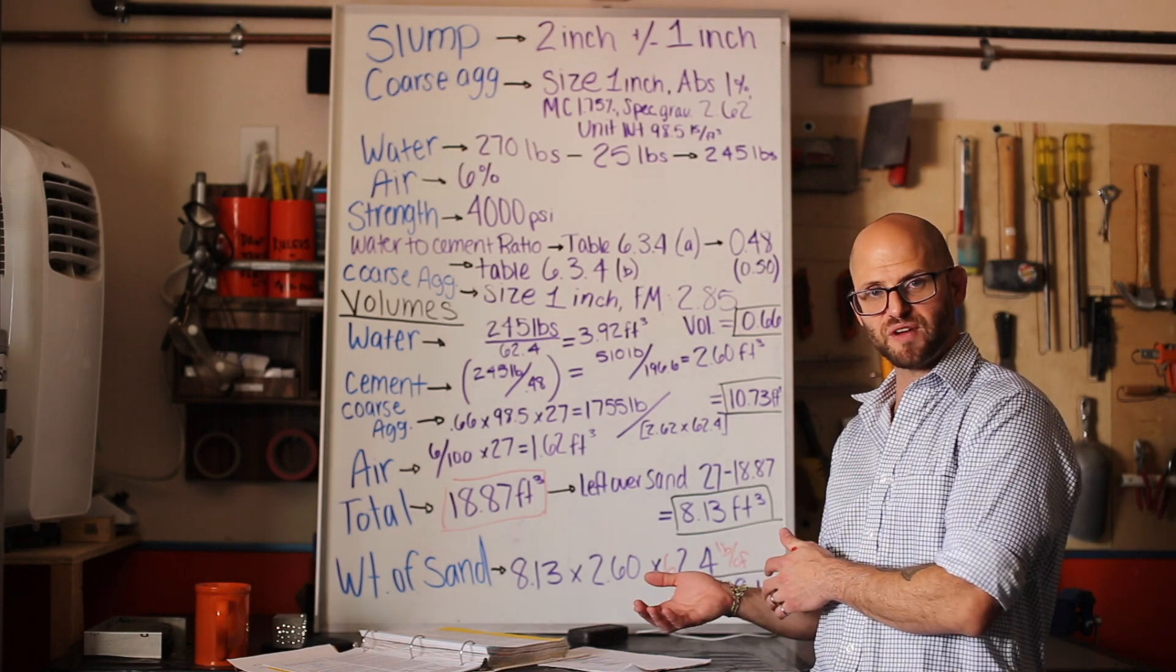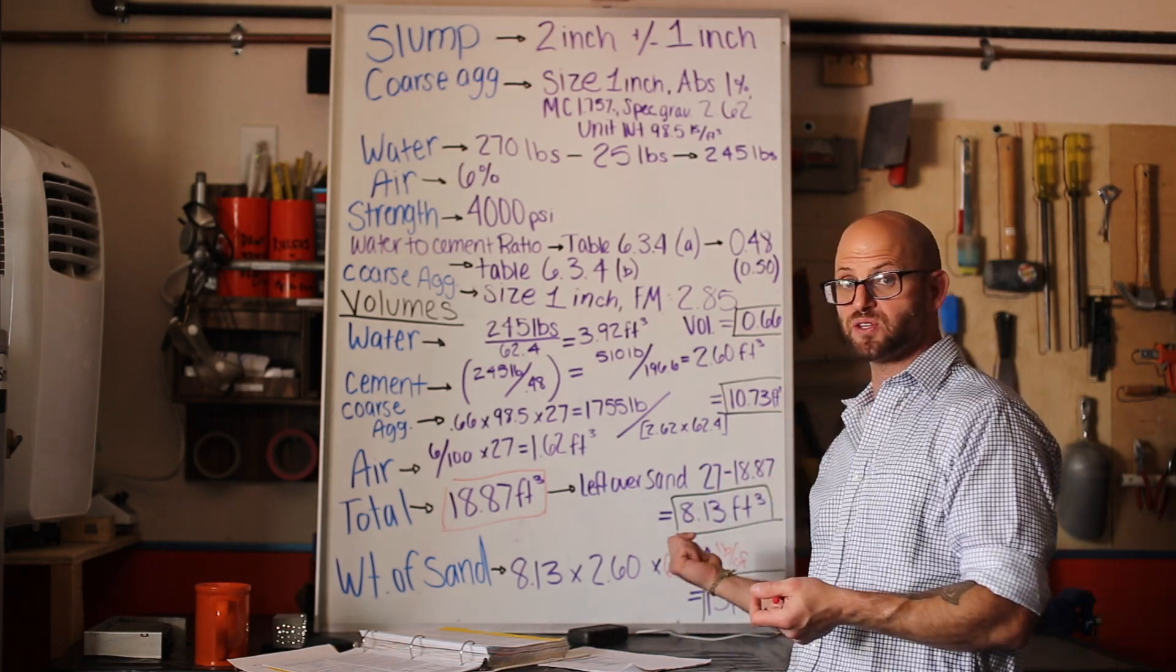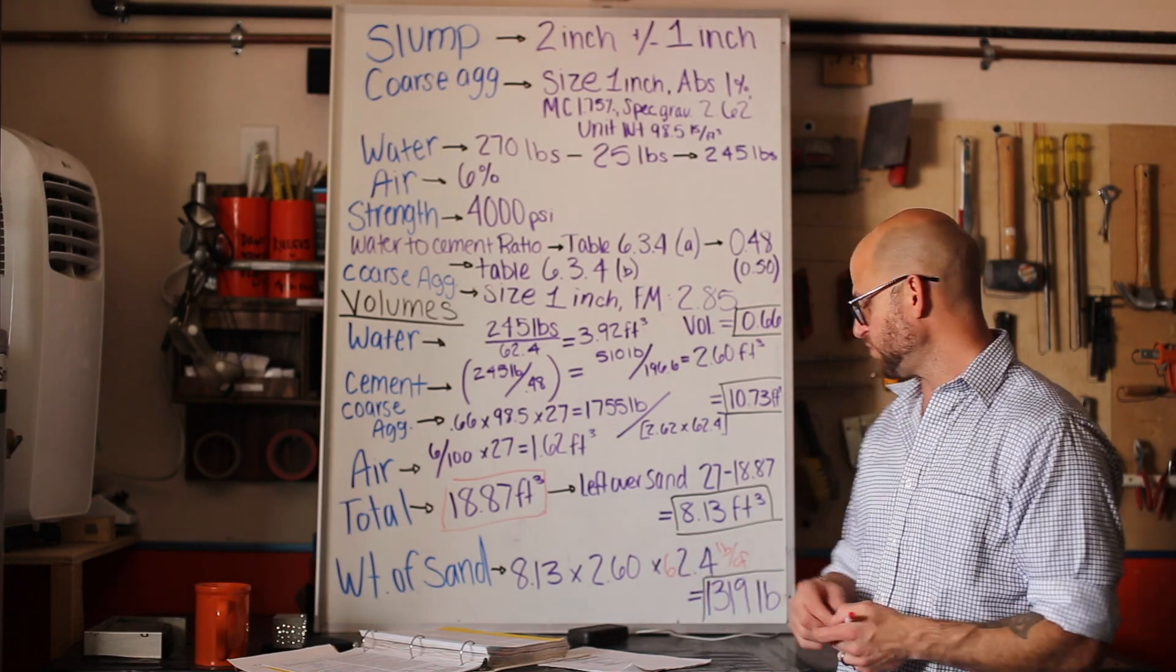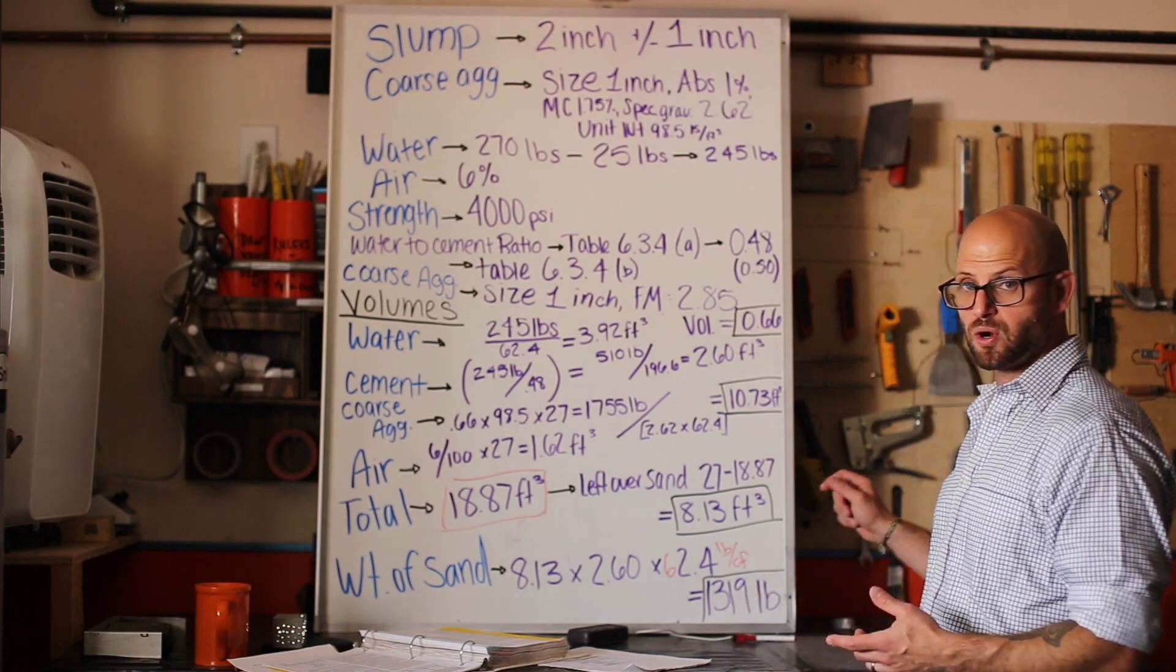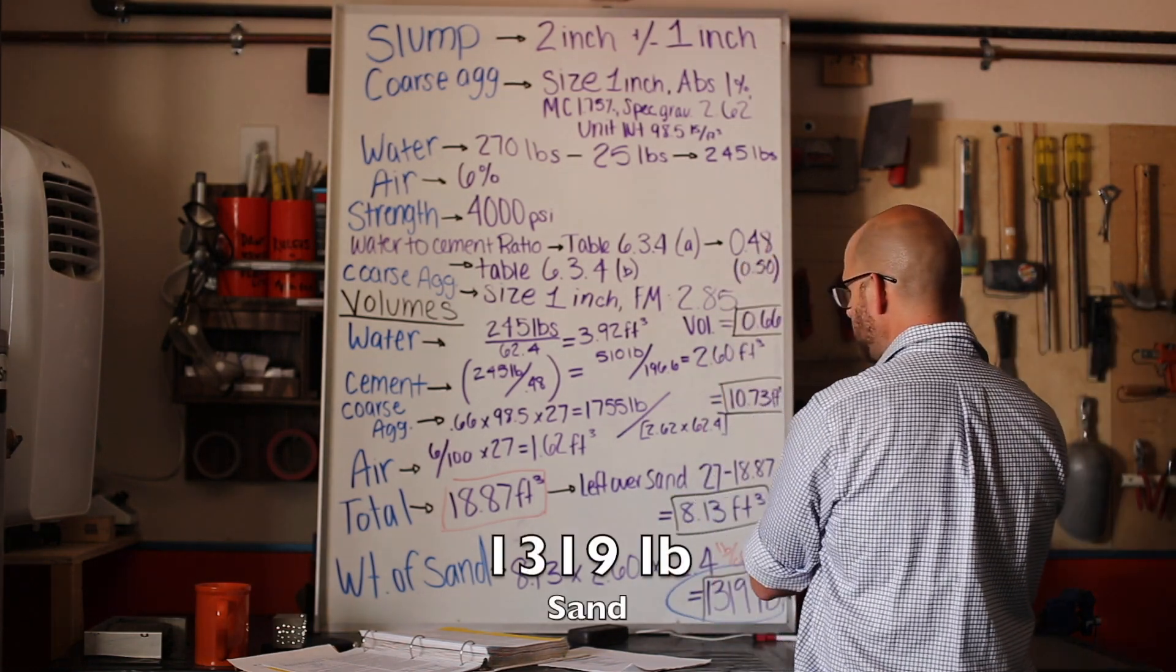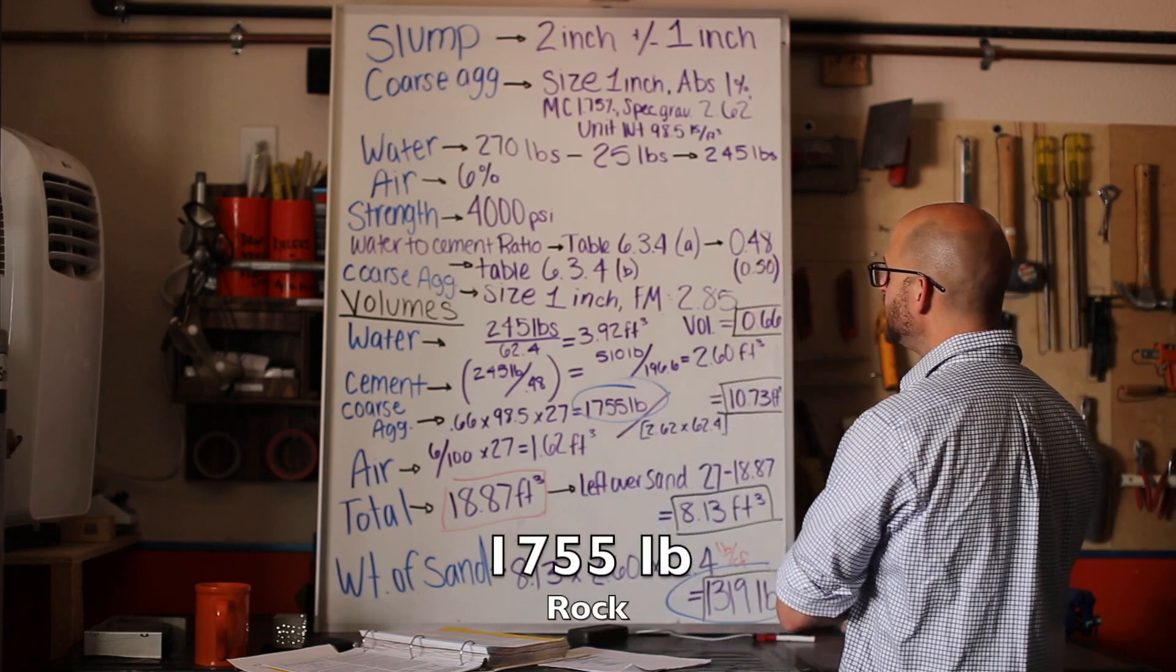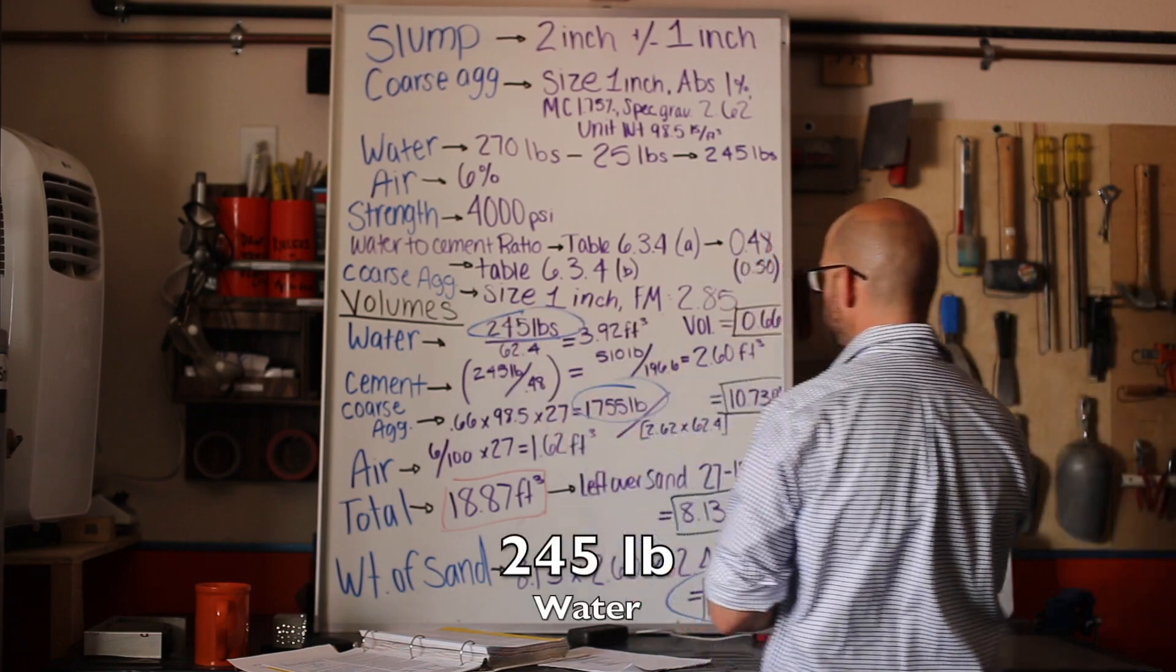That's multiplied by 62.4 pounds per cubic foot, and that's our unit weight of water. Our specific gravity of water is 1.0, our specific gravity of all these other materials is some other factor. We just take that specific gravity of that material, multiply it by the unit weight of water to get the unit weight of that material. It's unit conversion. We do that, we get 1,319 pounds per cubic yard for our concrete mix.